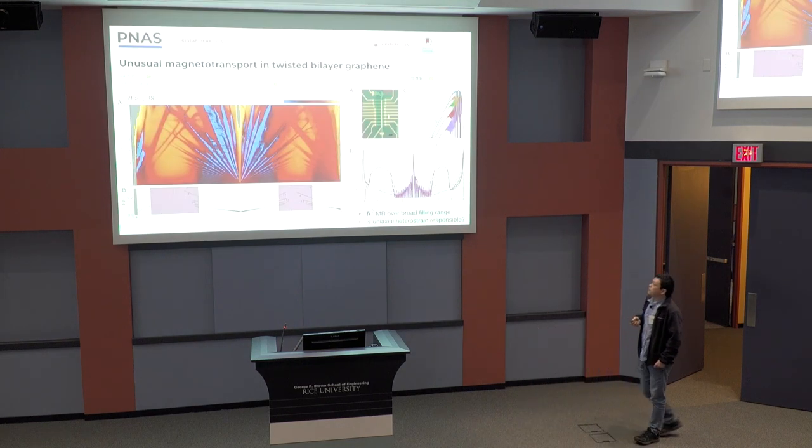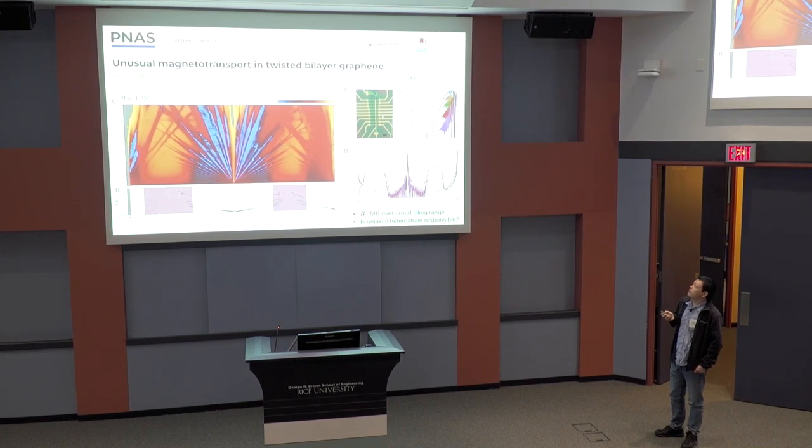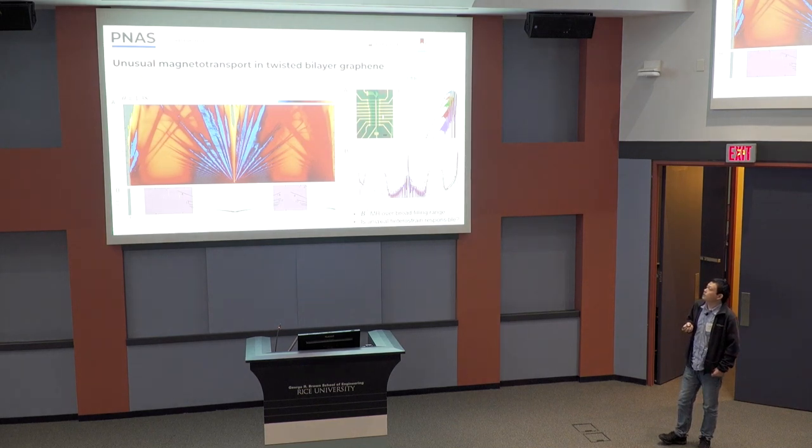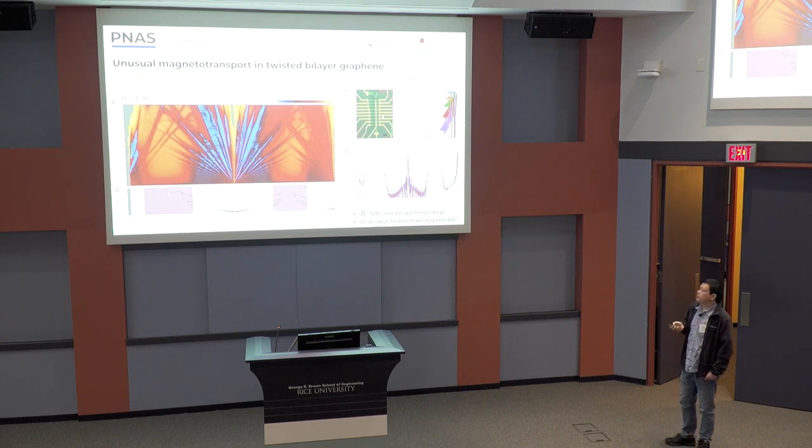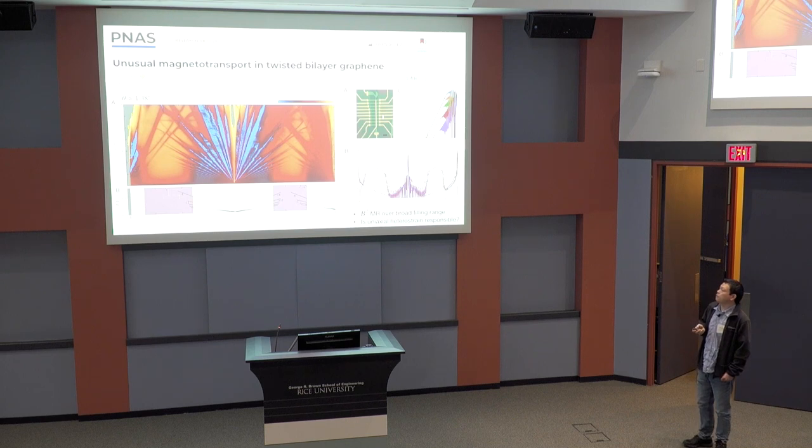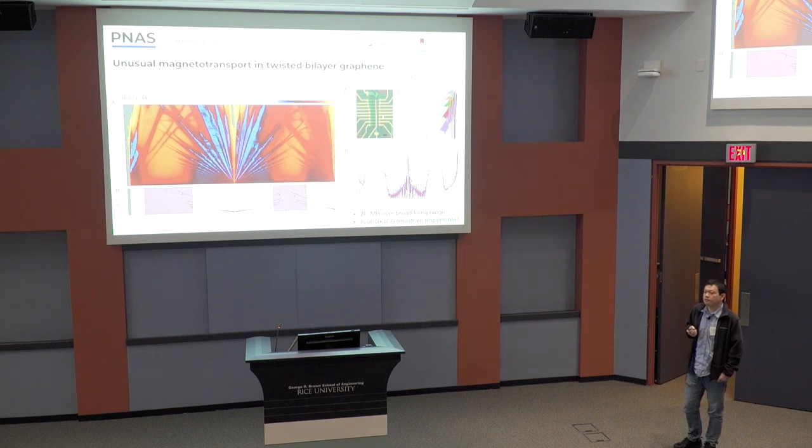So the motivation comes from this proceedings paper earlier in the year by our experimental friends. So what they did is they measured magnetotransport for a nominally 1.38 degree angle twisted bilayer graphene system. And what they find is the Landau fan diagram, this beautiful Landau fan diagram emanated from the point, which is associated with physics. And also, they don't find the cascade phenomenon, which is observed in magic angle devices. So it's supposed to be a weakly interacting system.